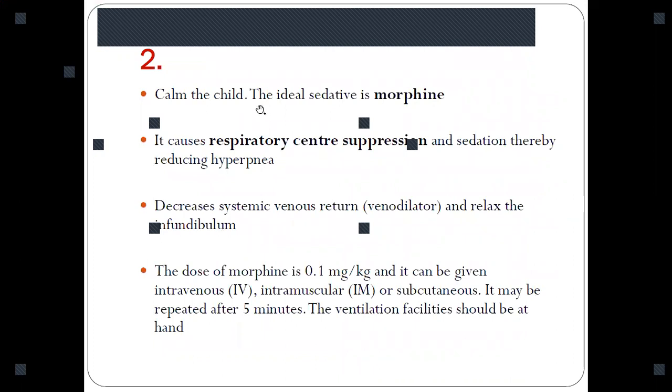Second thing is calm the child. The ideal sedative is generally morphine. Morphine causes respiratory center suppression. As we have already discussed in our previous video of theories of cyanotic spells, these cyanotic spells usually occur because of hyper-responsiveness of the immature respiratory center.